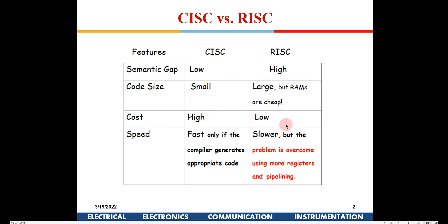In CISC, the cost is high because implementing complex instructions makes the processor design complex. In RISC, hardware implementation is easy and cost is low. RISC is more software-oriented and CISC is more hardware-oriented. In CISC the hardware is complex so the software is slightly easier. In RISC, since the codes are very small, they are fetched sequentially, but this problem is overcome using registers and pipelining.